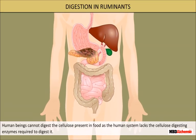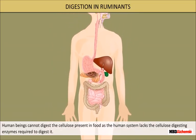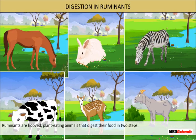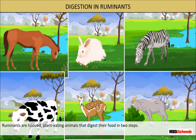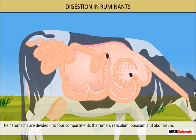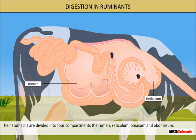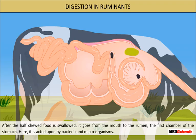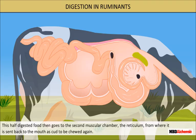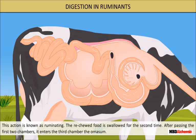Human beings cannot digest the cellulose present in food, as the human system lacks the cellulose enzyme required to digest it. Ruminants are hoofed plant-eating animals that digest their food in two steps. Their stomachs are divided into four compartments: the rumen, reticulum, omasum, and abomasum. After the half-chewed food is swallowed, it goes from the mouth to the rumen, the first chamber, where it is acted upon by bacteria and microorganisms. This half-digested food then goes to the second muscular chamber, the reticulum, from where it is sent back to the mouth as cud to be chewed again. This action is known as ruminating.